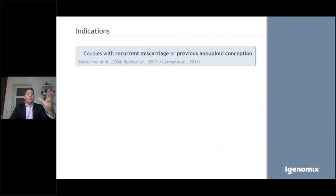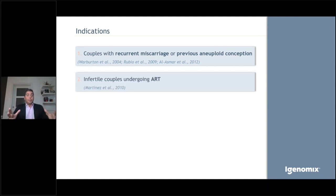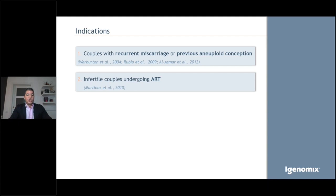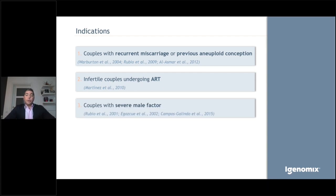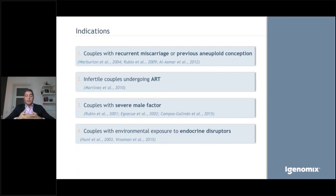Indications for this kind of test include: couples with recurrent miscarriage or previous aneuploid conception; infertile couples undergoing assisted reproductive treatments, since up to 60% of those couples will have an aneuploid miscarriage; couples with severe male factor — severe oligospermia with less than 2 million per milliliter — who can have more aneuploid miscarriages; and couples with environmental exposure to endocrine disruptors, either the male or the female.